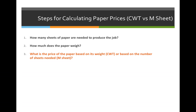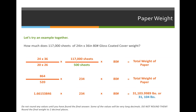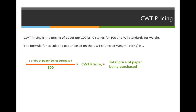The third step in calculating the price of the paper — or really the first step in calculating the price of paper after you do all the previous steps learned in the previous lectures — is to identify the formulas used for either CWT or M sheet pricing. CWT pricing is the pricing of paper per 100 pounds. C stands for 100, like a C note, and WT stands for weight. The formula is: pounds of paper divided by 100, multiplied by the CWT value. You can't calculate the CWT value — it has to be given to you, whether it's a dollar per 100 pounds or whatever that value is from a pricing list.